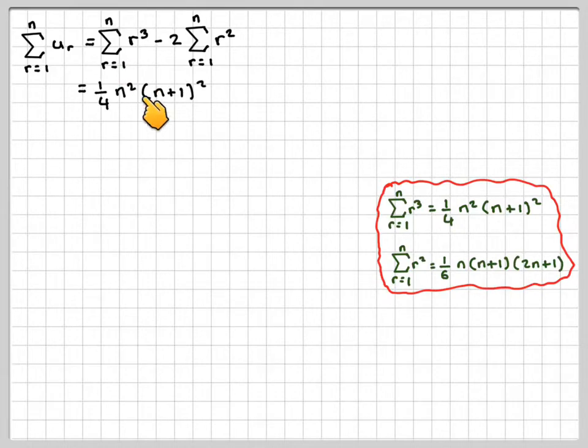So replacing, this will become 1 quarter n squared times (n plus 1) all squared minus 2 brackets of 1 sixth n(n plus 1)(2n plus 1).